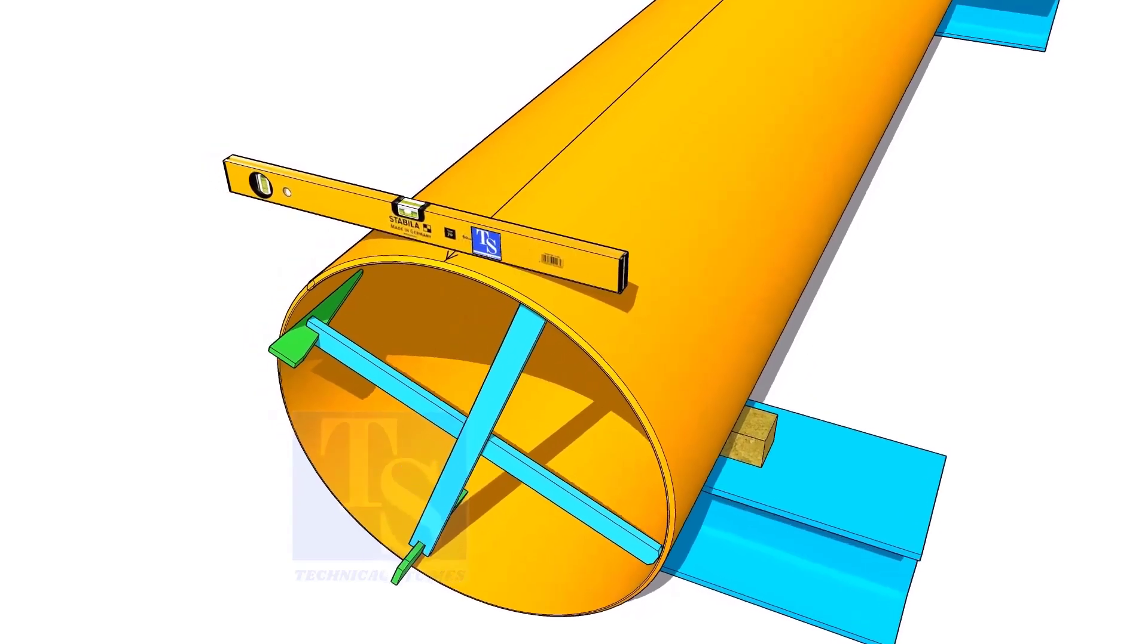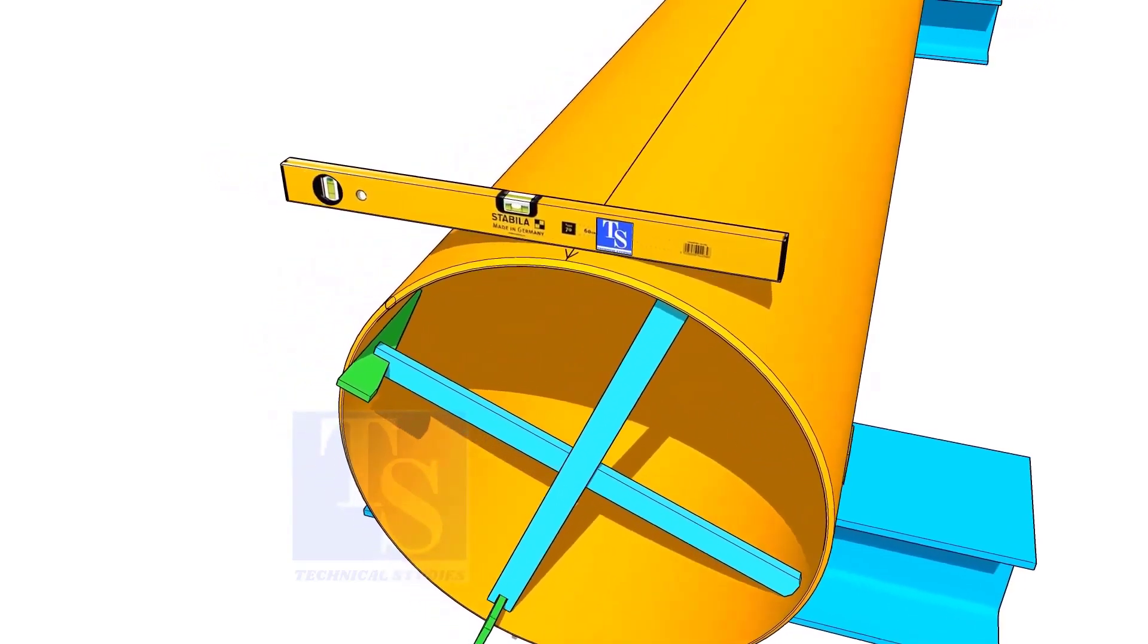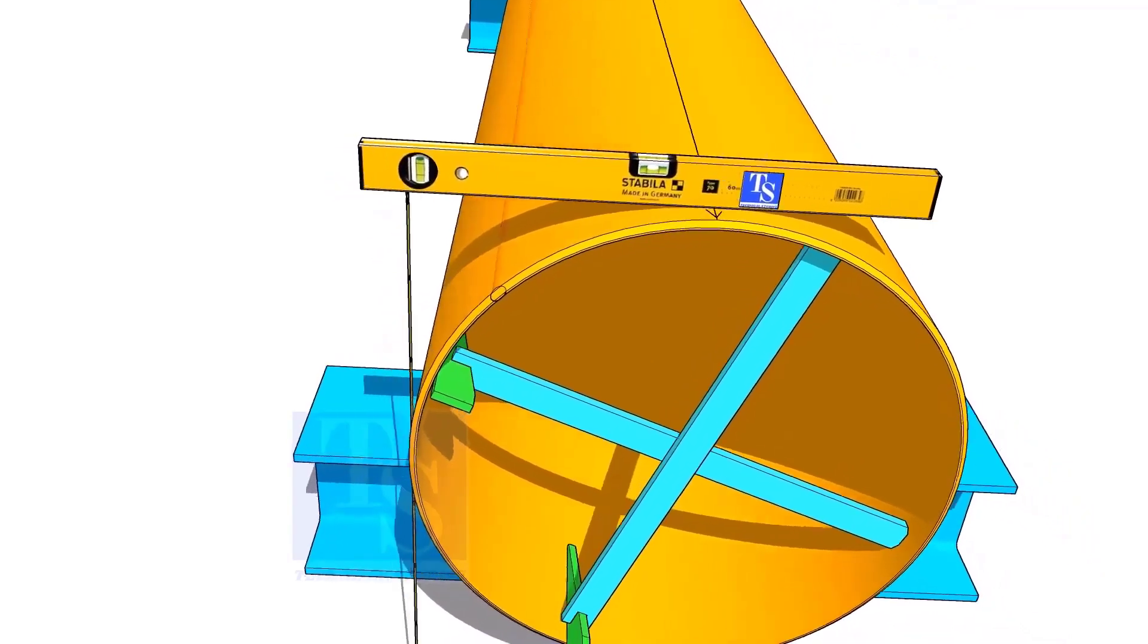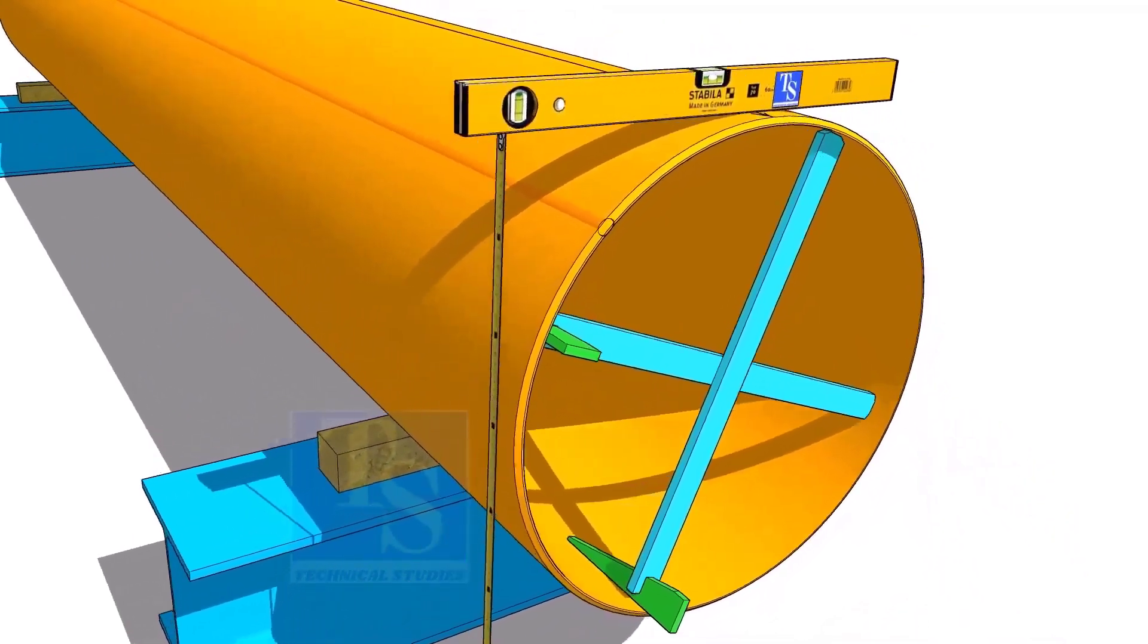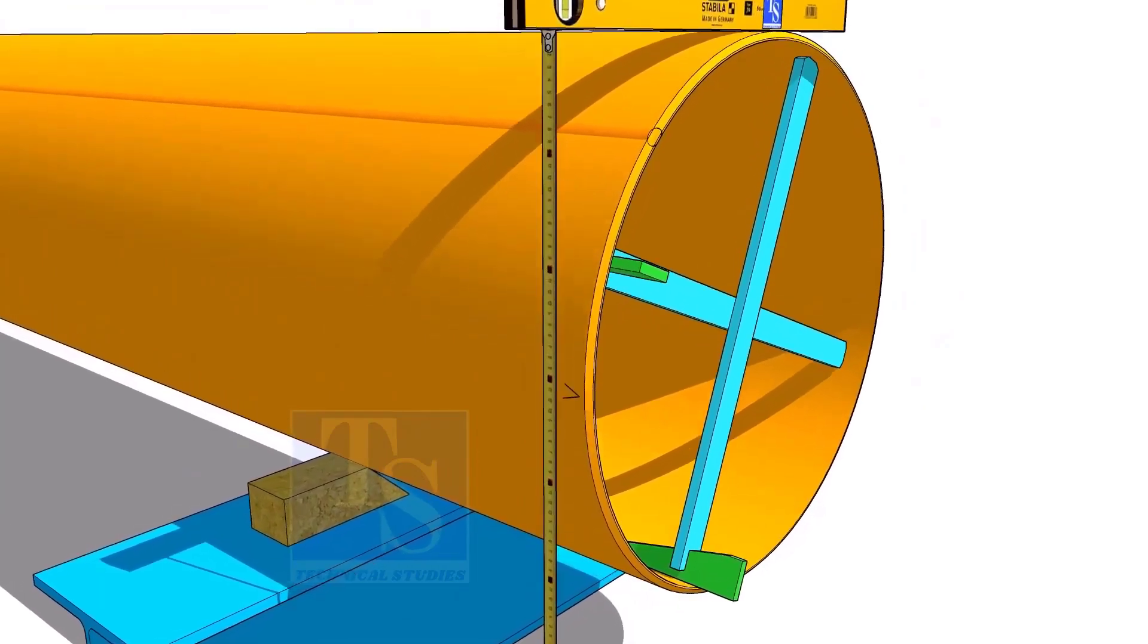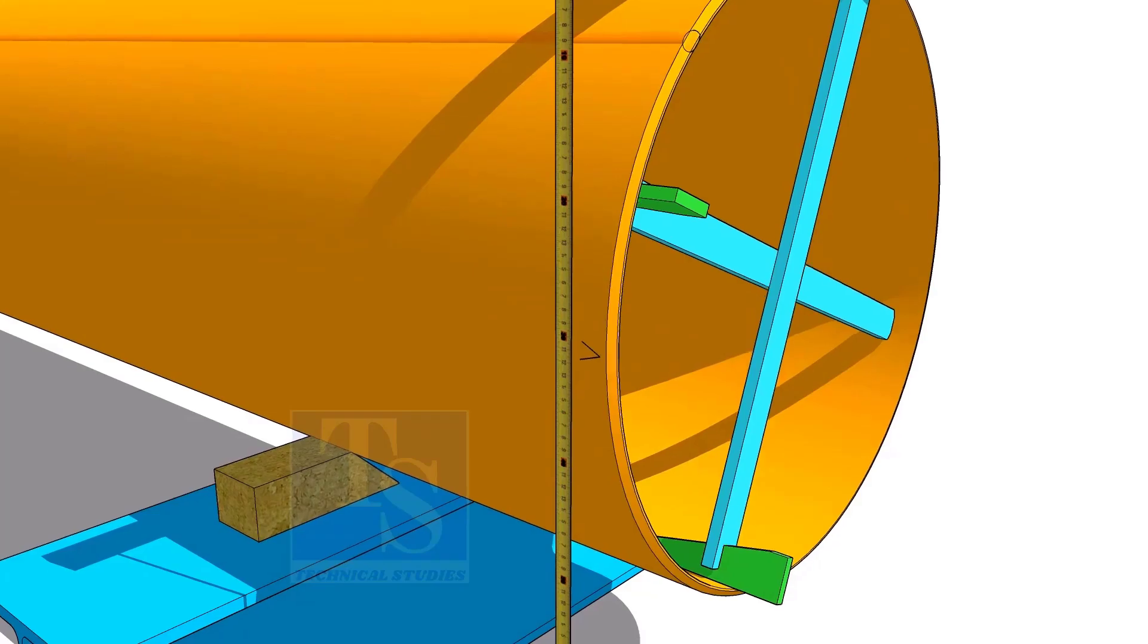Another method to mark the center line is, hold the level bottle horizontal and mark half OD on the side of the pipe. The advantage of this method is, you can mark two opposite center lines at the same time.